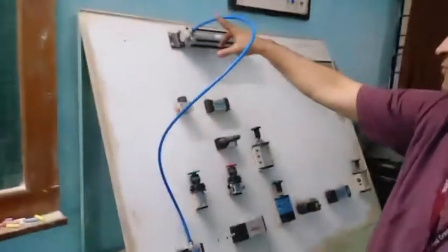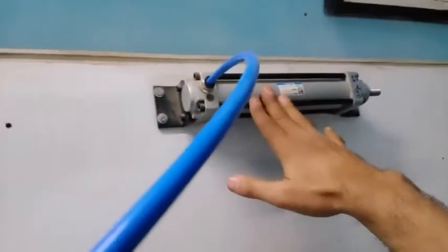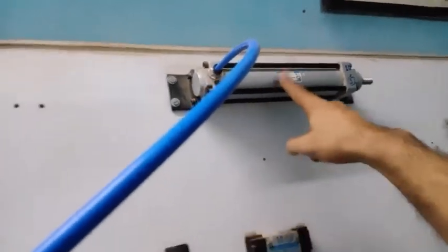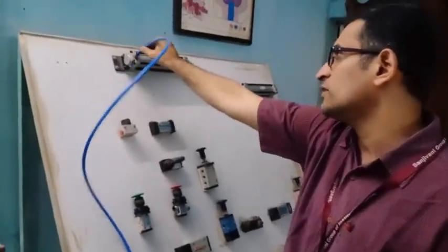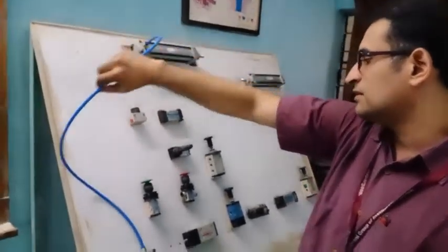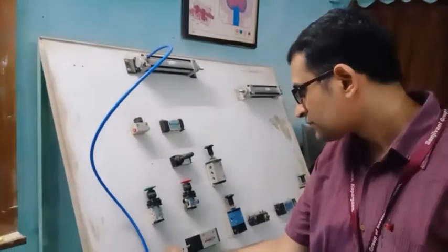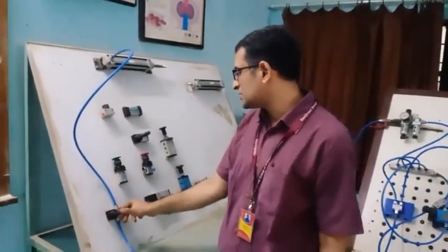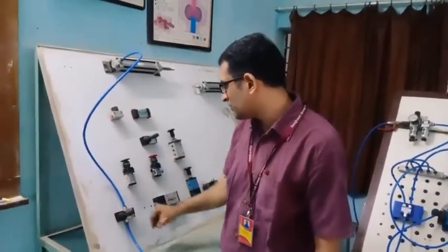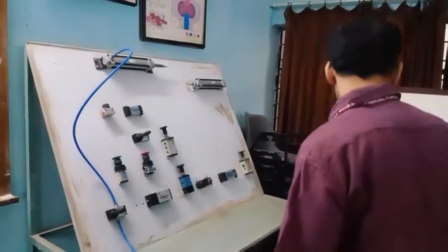This is a single-acting actuator. You could identify a single-acting actuator by only one supply line. Here, this is a 2x2 valve which it has. I will make sure that this 2x2 valve will remain in an open position.